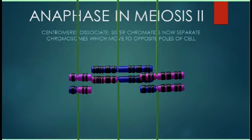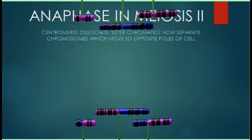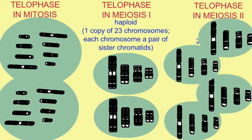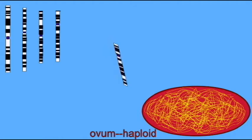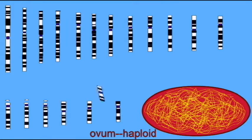In telophase of meiosis II, the four daughter cells, which have resulted from two rounds of cell division, then surround haploid sets of chromosomes — 23 chromosomes but only one copy each.